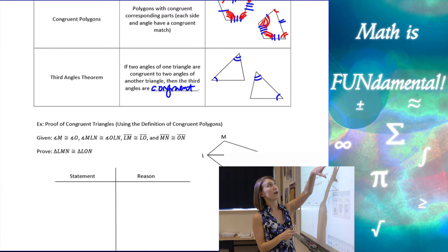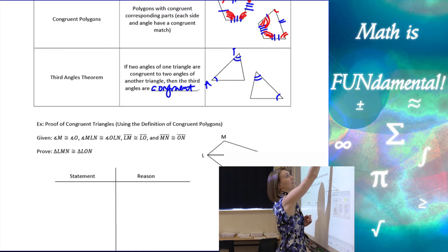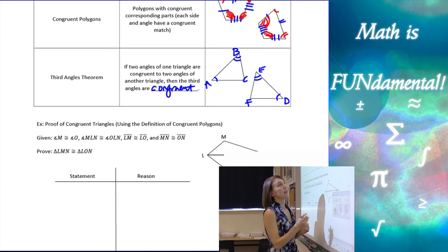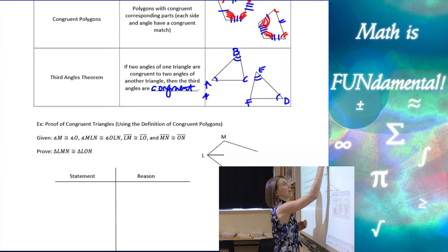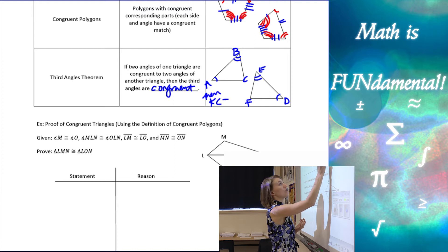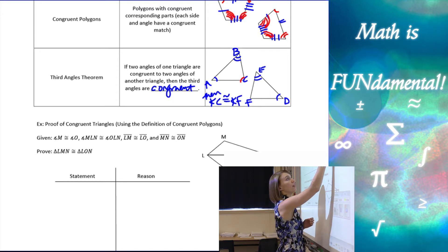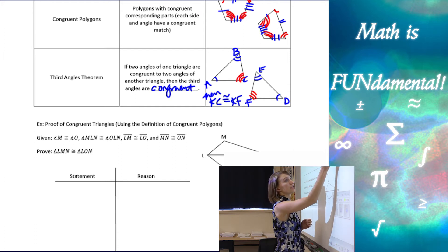So if these two angles here—let's say I have A, B, C, and then D, E, and F—if I know that angle A is congruent to D and angle B is congruent to E, then I can use this theorem to conclude that angle C would have to be congruent to angle F, just based on this theorem, the third angles theorem.